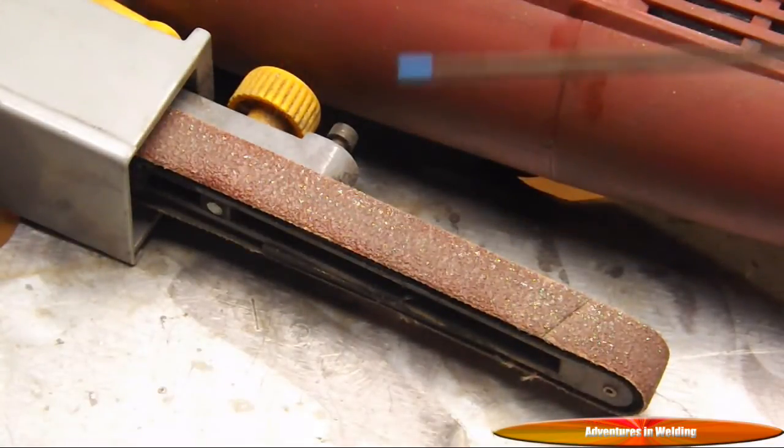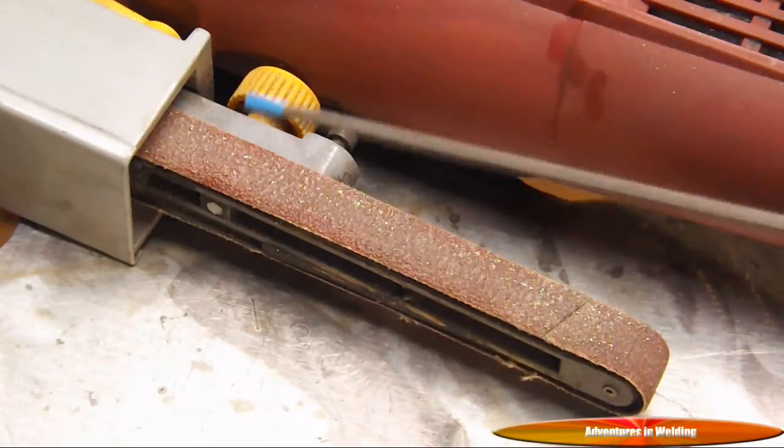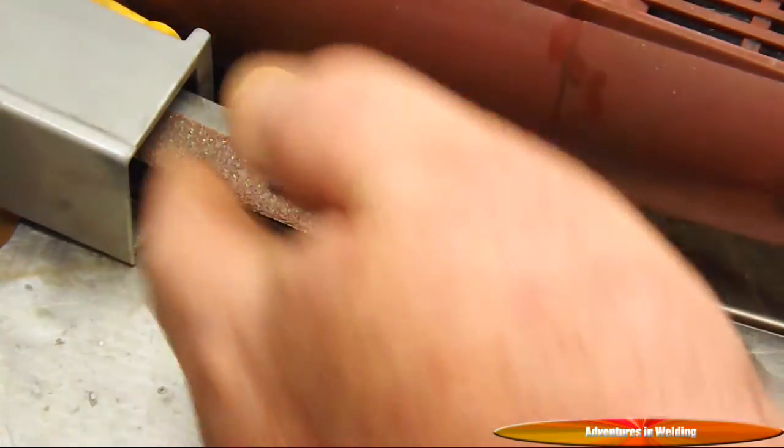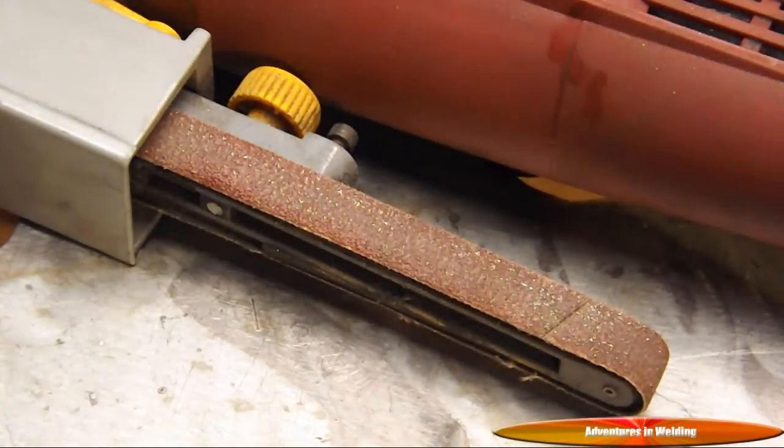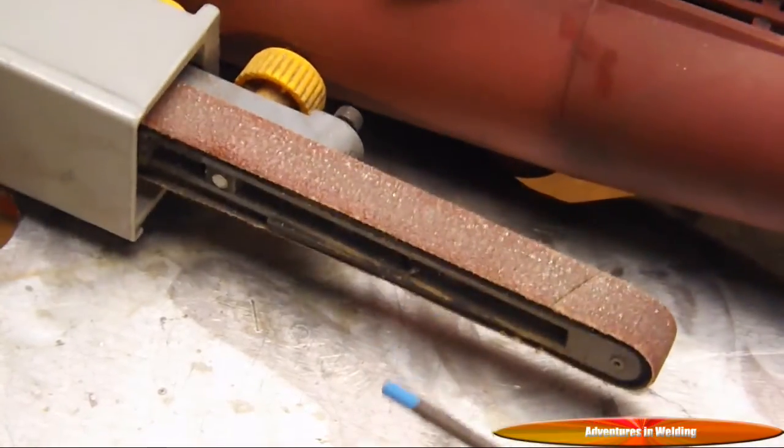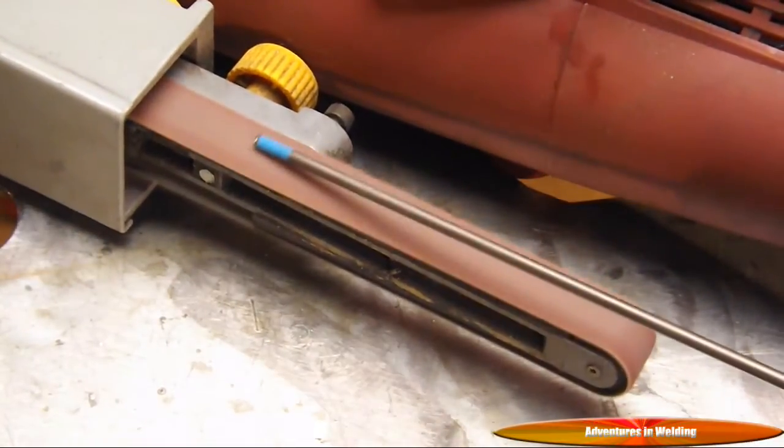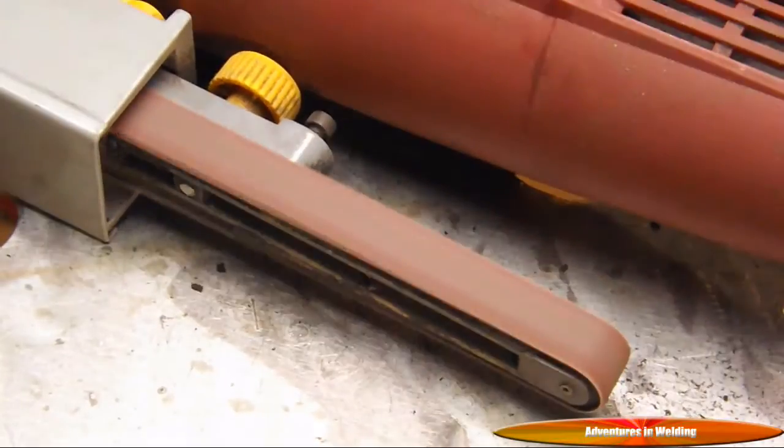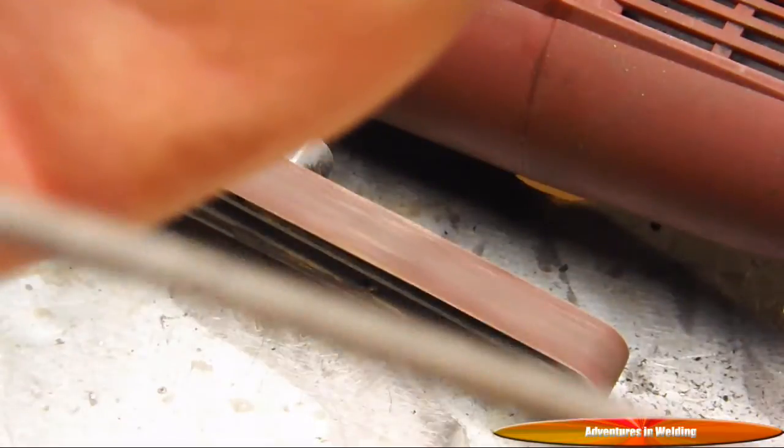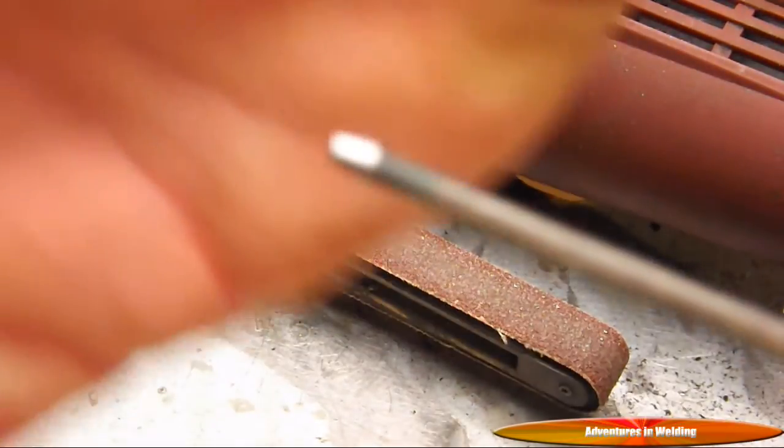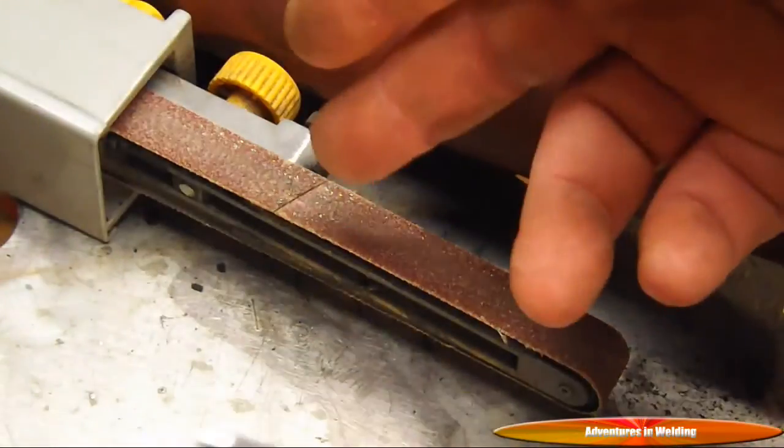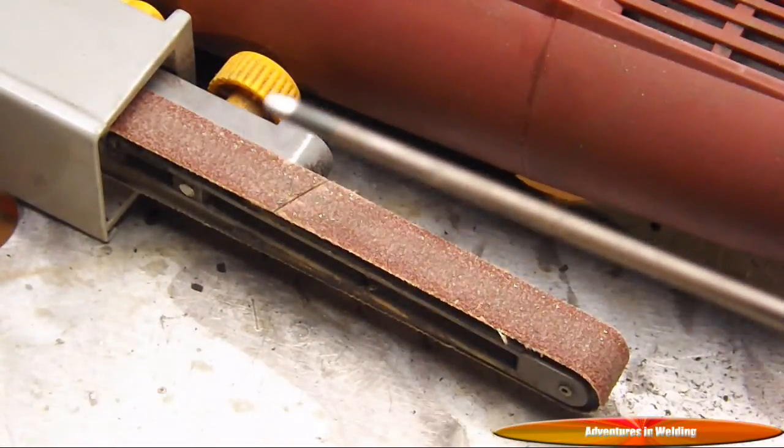All right, the next method we're going to use is the grinding belt. Again, you want to make sure that you keep your tungsten at a shallow angle and the rotation of the belt is along the length of the electrode. There you have it, again the same thing, our nice truncated point. Again, make sure you don't use this for anything else, so as not to contaminate your electrode.